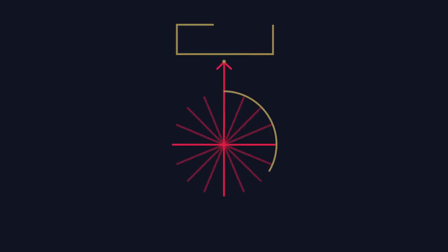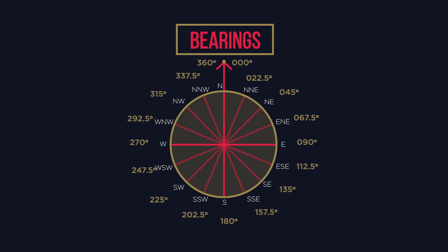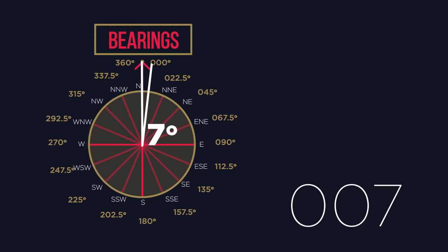There you have a quick guide to bearings. Remember, bearings help us with directions, and all bearings have three digits. So if you have an angle of seven degrees, your bearing is 007 degrees.